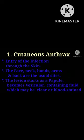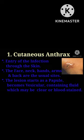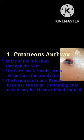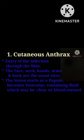The lesion starts as a papule, becomes vesicular containing fluid which may be clear or bloodstained. The whole area is congested and edematous, and several satellite lesions filled with serum or yellow fluid are arranged around a central necrotic lesion which is covered by a black scar.